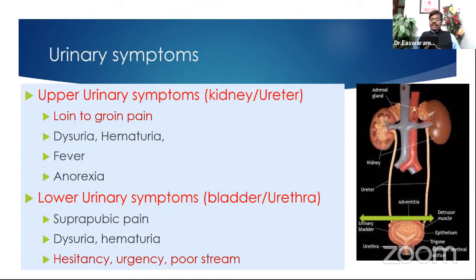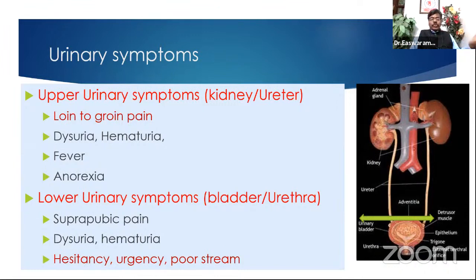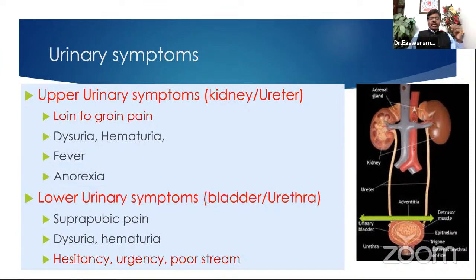Until last week we were talking about epigastric pain for the foregut, periumbilical for midgut, suprapubic for hindgut — central pain. Here it is lateral pain: right loin to groin means right kidney and ureter; left loin to groin means left kidney and ureter. Second, if there is renal disease they have hematuria. If there is infection like pyelonephritis or stone with infection, they have dysuria. Usually, because the kidney is highly perfused, infection easily causes bacteremia — spillover of bacteria into the bloodstream — so they present with fever.